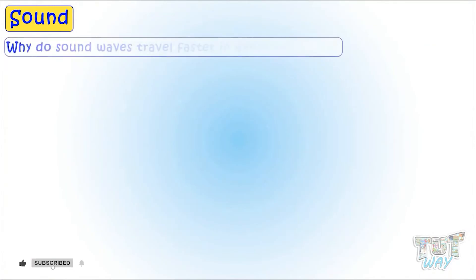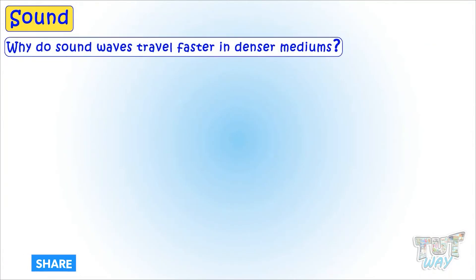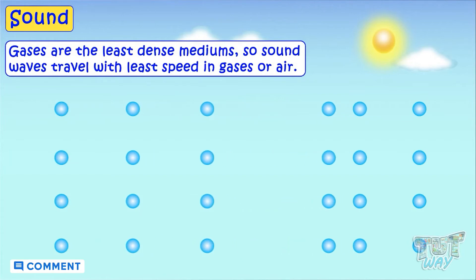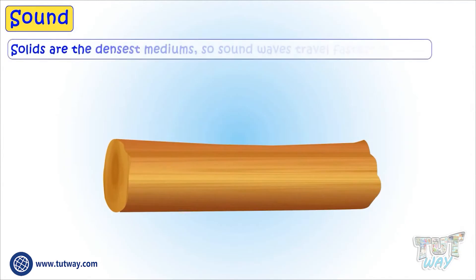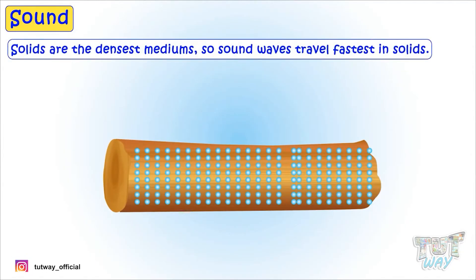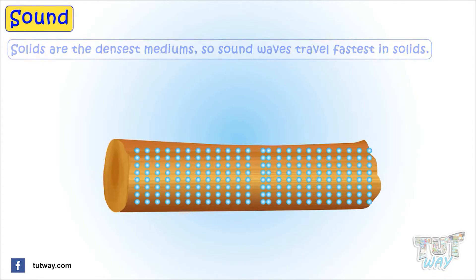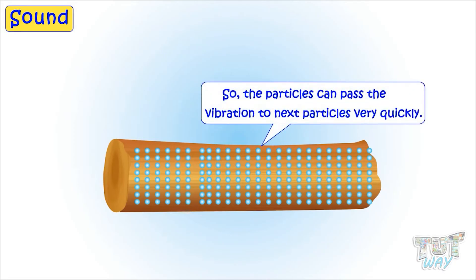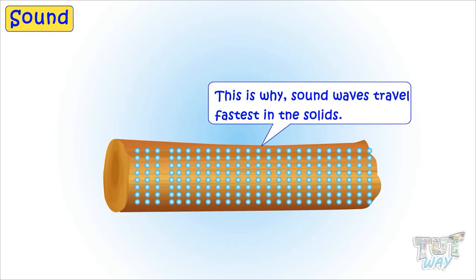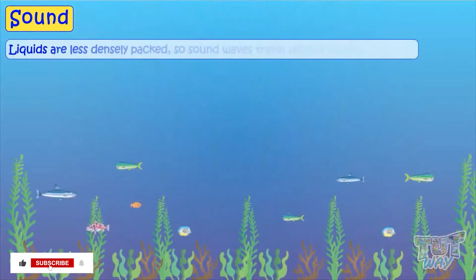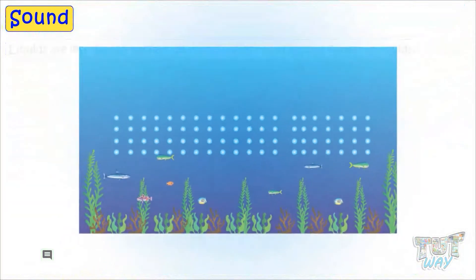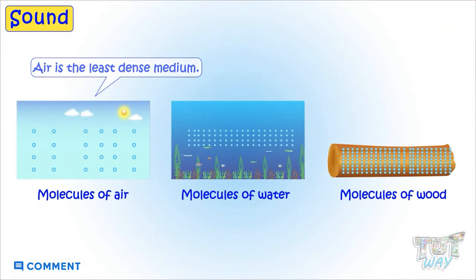Sound waves travel faster in denser mediums. Gases or air is the least dense medium, and sound travels with the least speed in air. Solids are the densest mediums, so sound waves travel fastest in solids. The distance between particles in solids is very small, so particles can pass the vibration to the next particle very quickly. Liquids are less densely packed, so sound travels second fastest in liquids. Air is the least dense medium, so sound waves travel with the least speed in air or any gas.